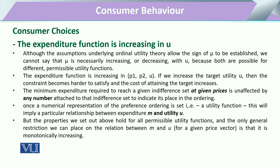The expenditure function will be increasing in prices, as already studied, and at the same time it will be increasing in utility. If the consumer wants to increase target utility, the constraint becomes harder to satisfy, and therefore the cost of attaining that target increases. The minimum expenditure required to reach a given indifference curve is determined by given prices, held constant as ceteris paribus and unaffected by scaling.